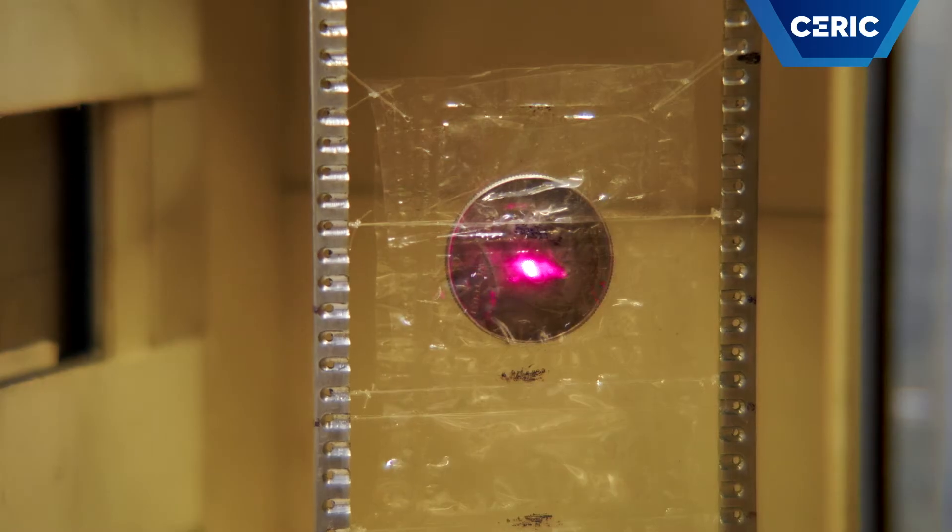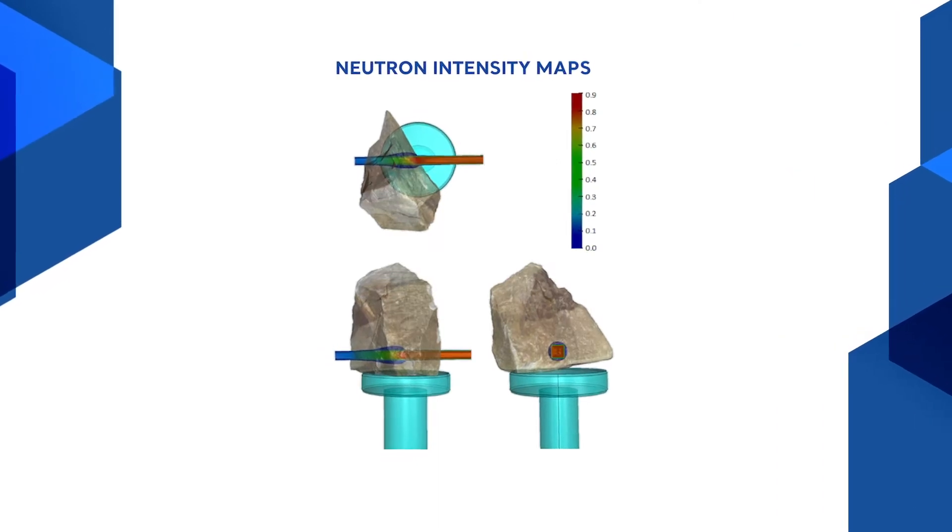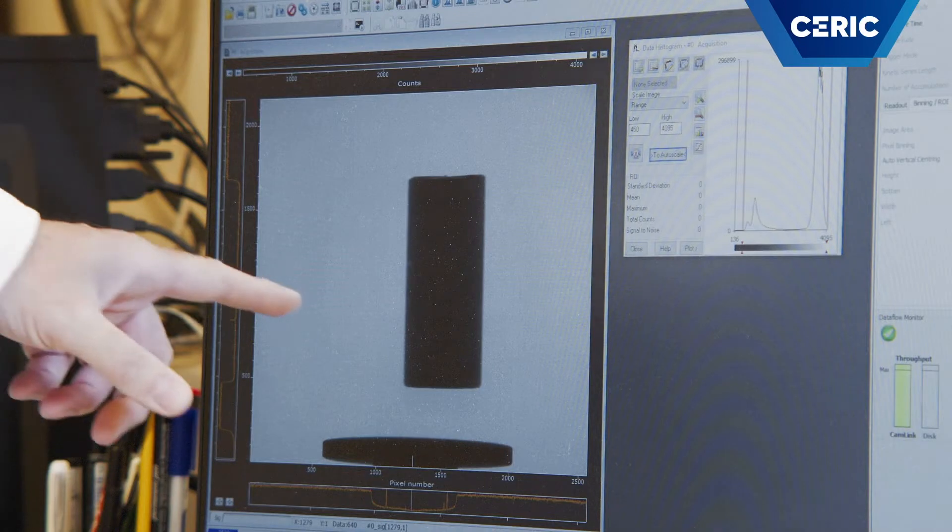At the NIPS NORMA station, we combine visual information of neutron imaging and the composition analysis to study inhomogeneous samples.